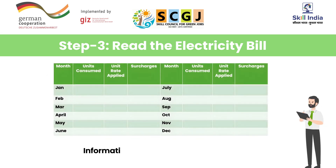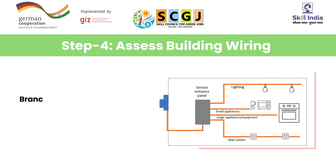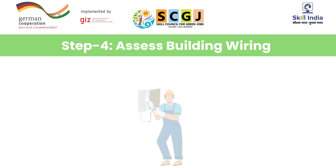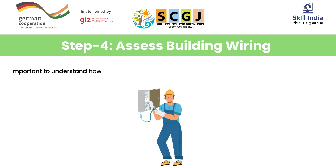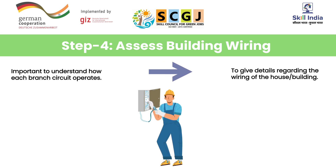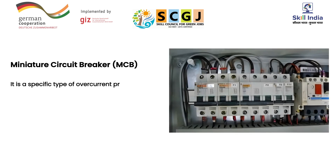This is an example of how you can record the data of electric bills in a table. Assessing the wiring of the building is a necessary step that you will take up as a solar PV installer. But before doing the assessment, understand the concept of a branch circuit. A branch circuit refers to a specific type of overcurrent protection device used in a branch circuit.